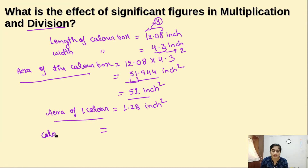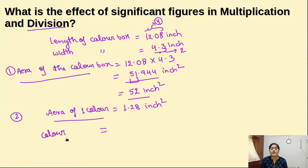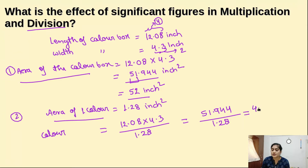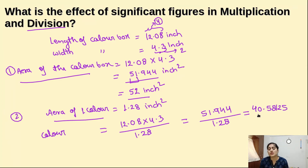One important thing: whatever rounding off we do, we do it in the final calculation only. The final calculation here is finding the number of colors after both multiplication and division. So it will be 12.08 × 4.3 ÷ 1.28, which gives 51.944 ÷ 1.28. We do not round off in between. The final answer is 40.58125.